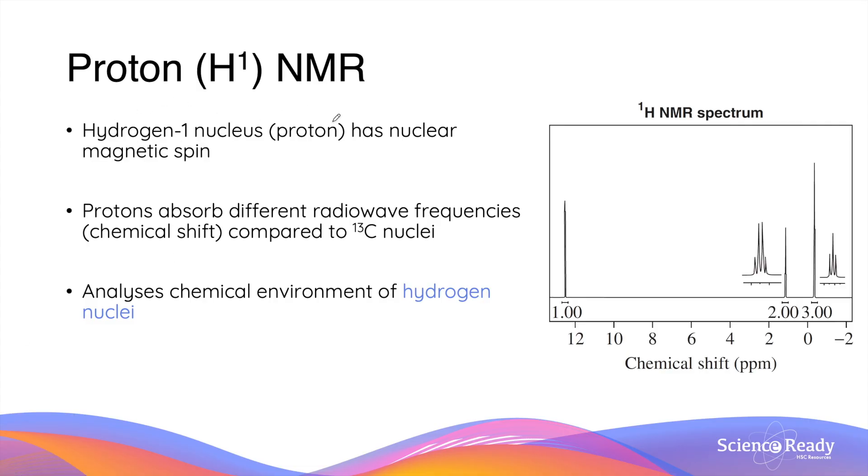Hydrogen-1 nucleus, which is also known as a proton, also has a nuclear magnetic spin as one of its unique properties. This is because hydrogen-1 nucleus has an odd atomic number as well as an odd atomic mass.